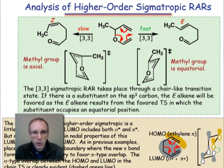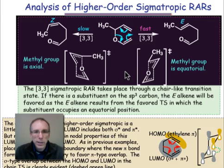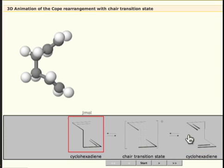To maximize orbital overlap between the HOMO and LUMO domains, the 3,3-sigmatropic rearrangement proceeds through a chair-like transition state. This is easily seen with the animation that you can find hyperlinked to your notes.